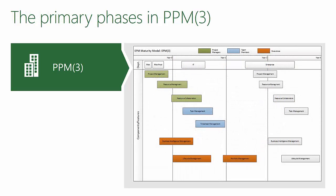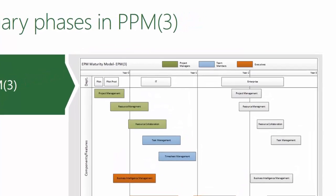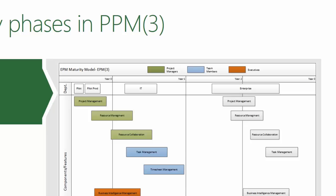The primary phases of PPM3 focus on project management as the central and primary phase, then moving through resource management, then eventually getting into collaboration, and then task and eventual timesheet management.